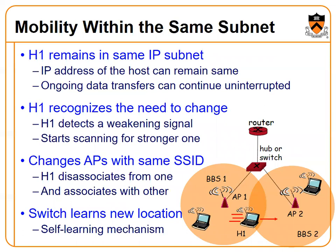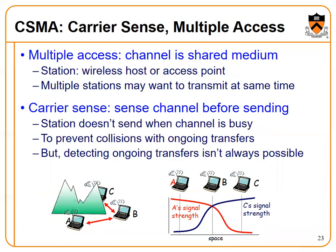H1 remains in the same IP subnet, so the IP address remains the same and ongoing data transfer continues uninterrupted. H1 detects a weakening signal, starts scanning for a stronger one, and changes to an access point within the same SSID — disassociating from one and associating with another. The switch learns the new location.